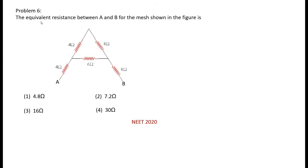Problem number 6: the equivalent resistance between A and B for the mesh shown in the figure is - this is the figure given. Option 1: 4.8 ohm, option 2: 7.2 ohm, option 3: 16 ohm, option 4: 30 ohm. NEET 2020.